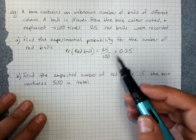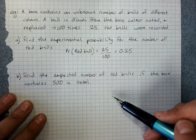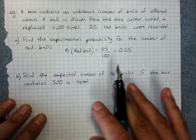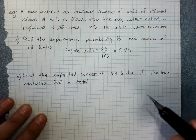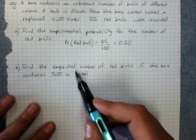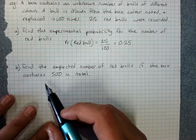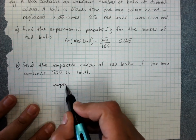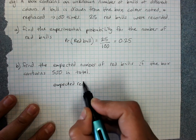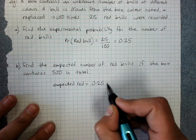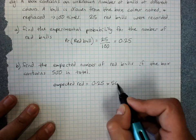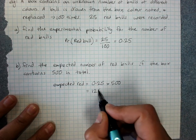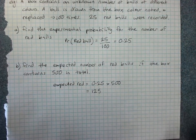Now what that says is we expect a quarter of the balls in that box to be red. It might not be exactly that, but that's our expectation. So when we want to find the expected number of red balls, if there's 500 balls in the box, probability of 0.25 times 500 is 125 red balls.